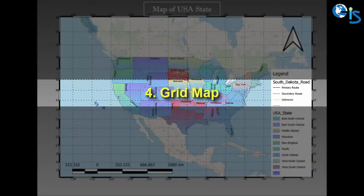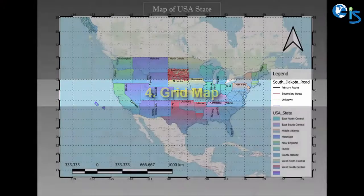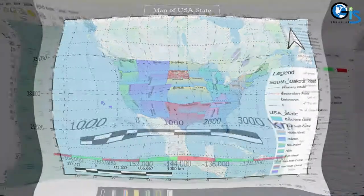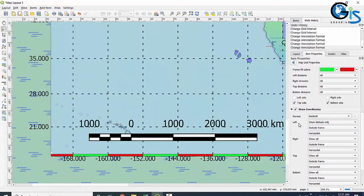If you can create a grid map, that means you are an expert in QGIS map layout, by which you can present any kind of map dynamically in an interactive, designed, and organized way.